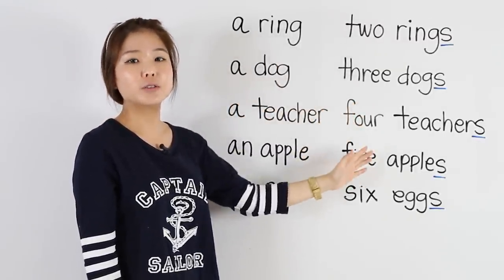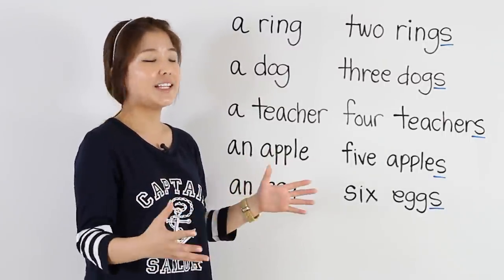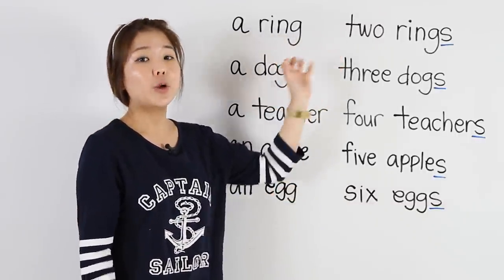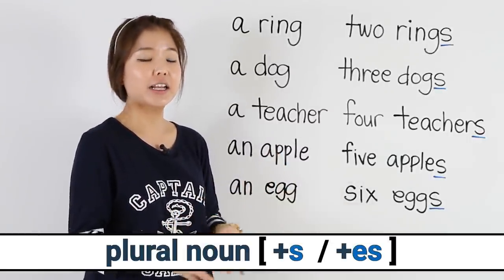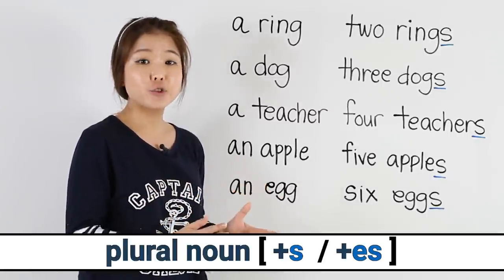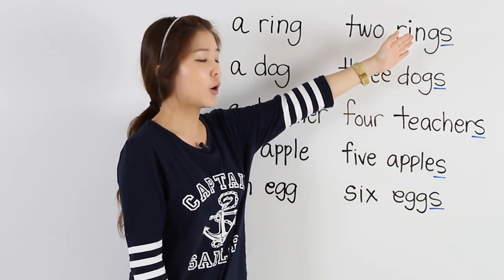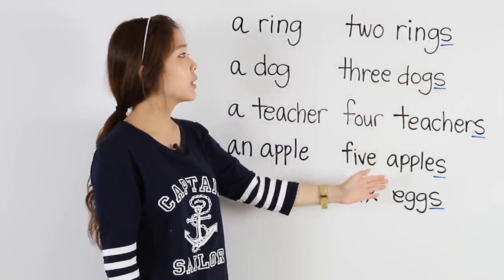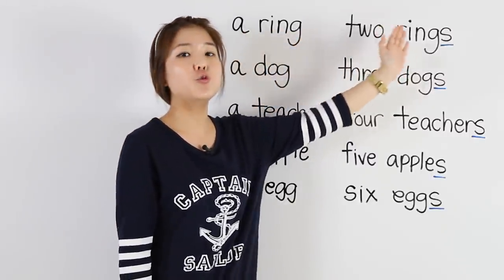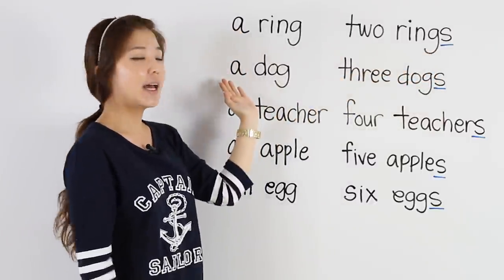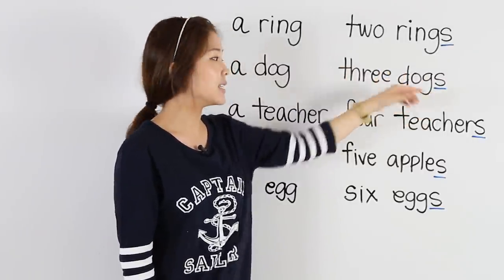Now over here we have plural nouns. Plural means more than one — two, three, four, and so on, so many. When we have a plural noun, don't forget, we have to put S or ES. The nouns here, you just have to add an S. We had one ring — now we have two rings, with an S. We had a dog — the plural is three dogs, again with an S.